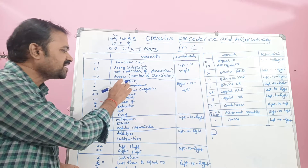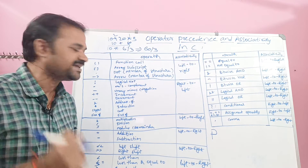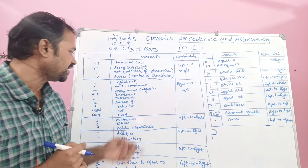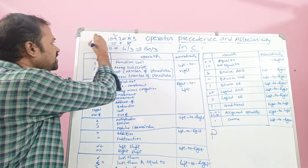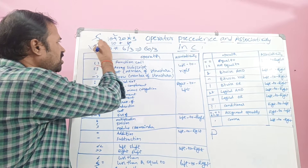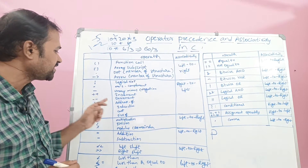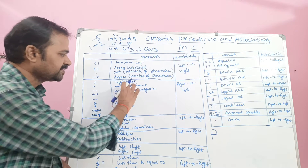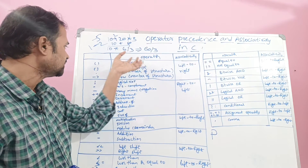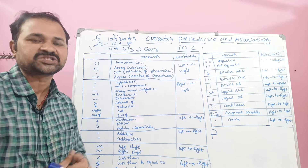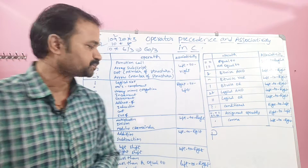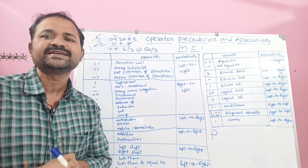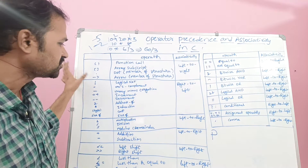Next we have unary operators. Logical NOT is a unary operator because it is performed on a single operand. Likewise, ones complement or bitwise complement is a unary operator because it is performed on a single operand. Next we have unary minus — performing minus on a single operand — whereas binary minus performs the operation on two operands. We also have increment and decrement operators, address-of operator, indirection operator (star), type cast operator, and sizeof operator. For all these unary operators, associativity is from right to left.